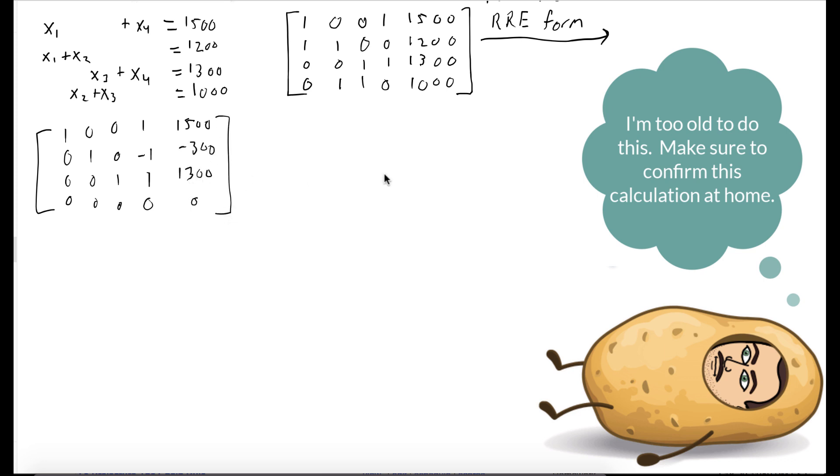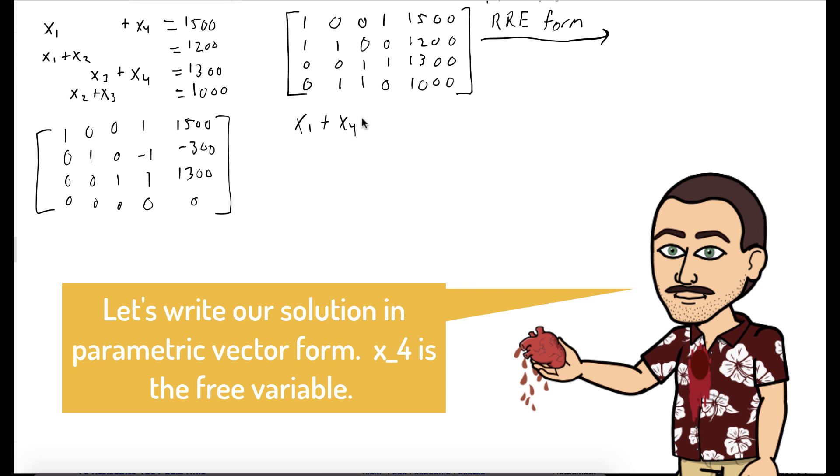We could write the corresponding system to this matrix. And now notice that we have pivots in the first three columns, but the fourth column, there's no pivot. So x4 is a free variable.